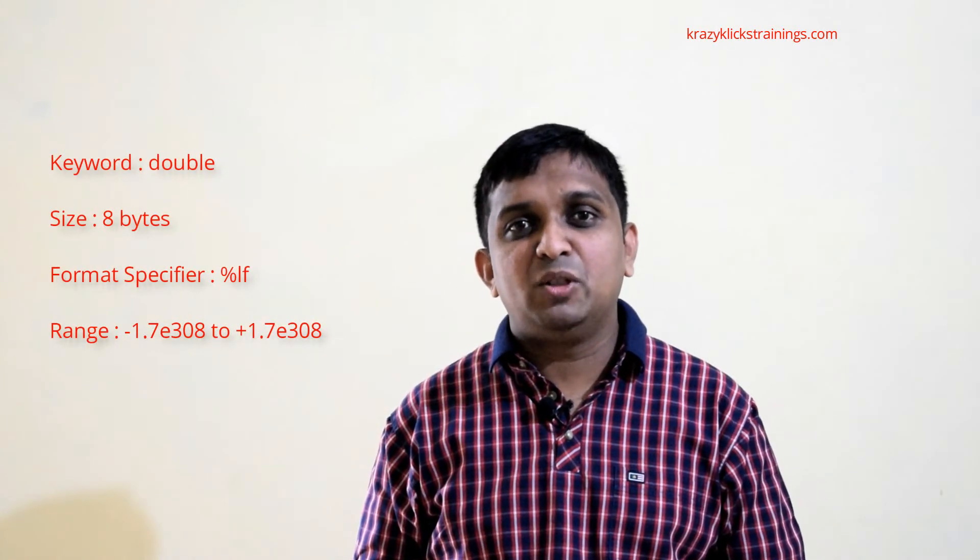The next data type is double. Double is the same as float — doubles are also numbers with a fractional part — but the range of double is larger than float. For double, the keyword is double, size is 8 bytes because the range is larger, and the format specifier is %lf. The range is displayed on the screen.